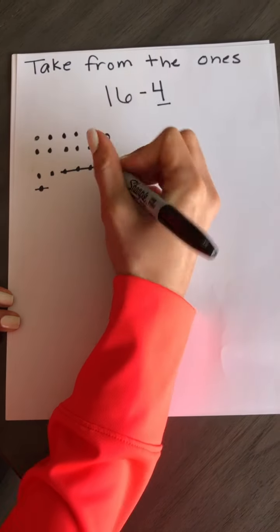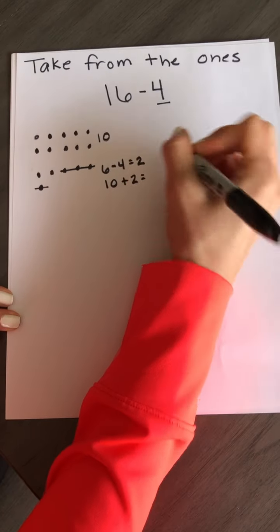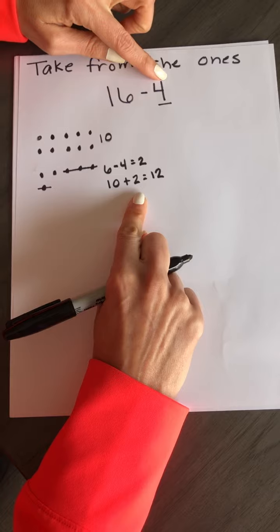So I need to add my 10 plus my 2. And my 10 and 2 make 12. So I know 16 minus 4 equals 12.